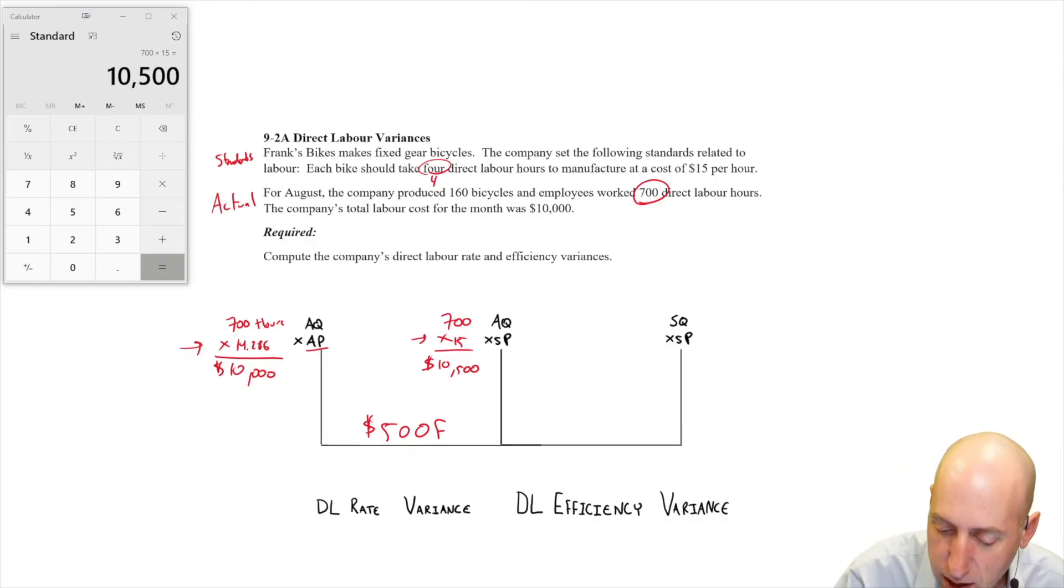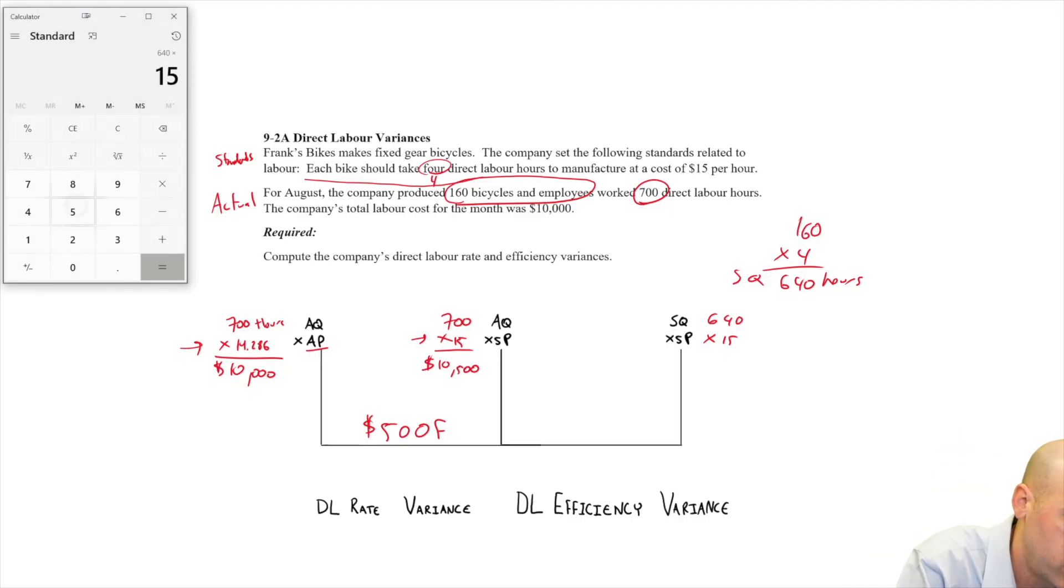Okay, let's look at SQ times SP. Our SP remains 15. Now we have to say, given the fact that we made 160 bikes, how many hours should it have taken? And the paragraph above says each bike takes four hours. So 160 times four, this should have taken 640 hours. That's the SQ. So SQ 640, 640 times 15 is $9,600. So 9,600 versus 10,500, the difference there is the variance. This is a $900 variance.